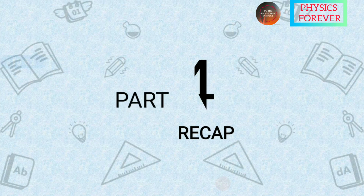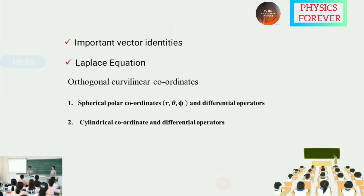Recap: today we discussed important vector identities, Laplace equation, orthogonal curvilinear coordinates, and spherical polar coordinates (r, theta, phi) with differential operators. For cylindrical coordinates, we will discuss in the next video. Cylindrical coordinates are similar to spherical but replace phi with z — that is the main difference.